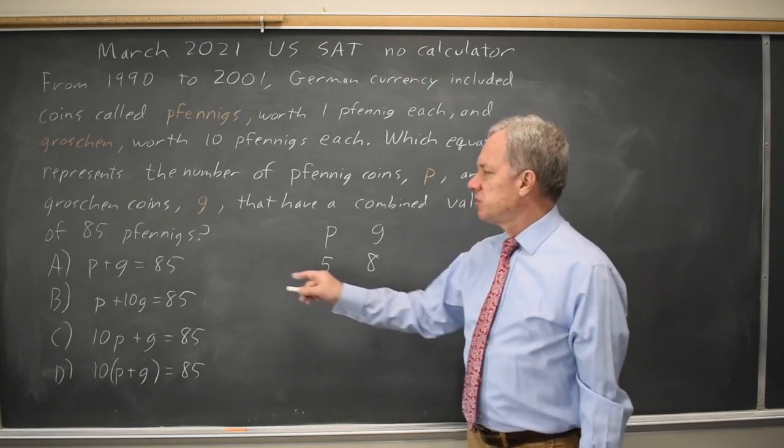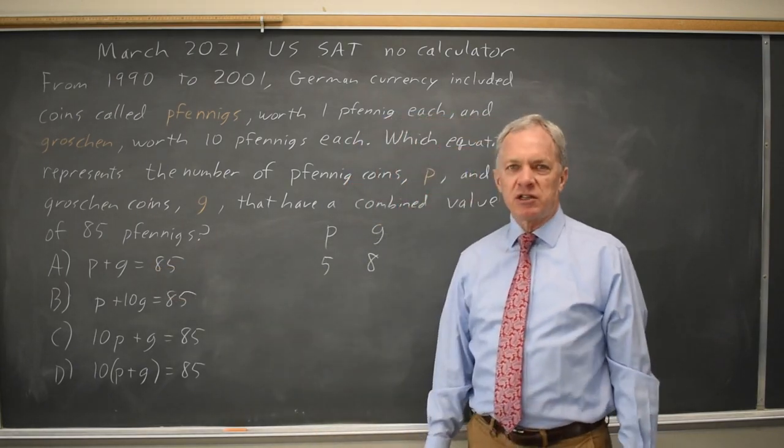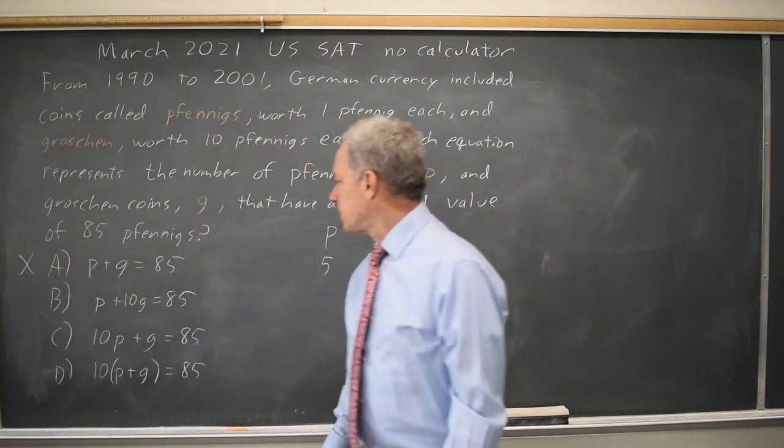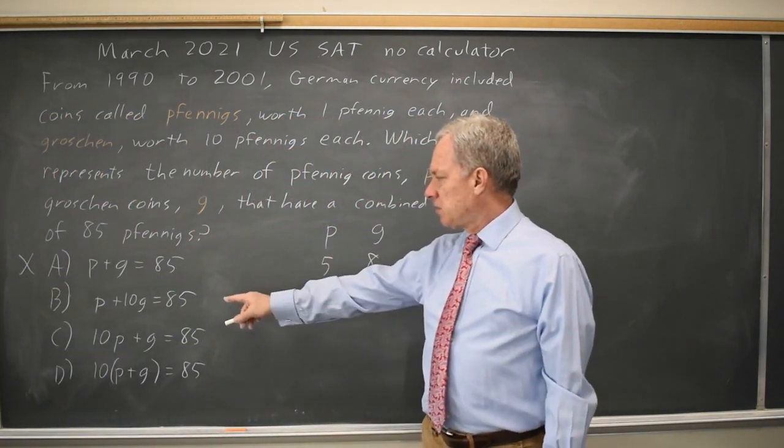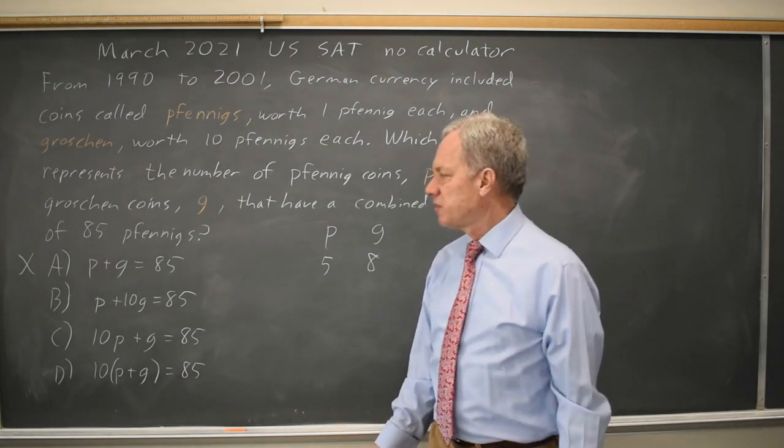If I try this combination in choice A, 5 plus 8 is 13, which is not 85. That does not match the equation, so the equation for A cannot be my correct equation. If I try this in B, 5 plus 8 times 10 is 5 plus 80 equals 85. That does work.